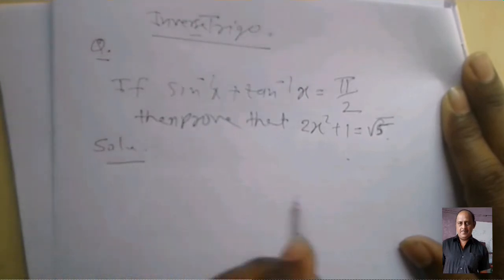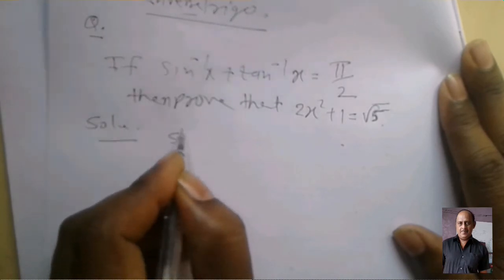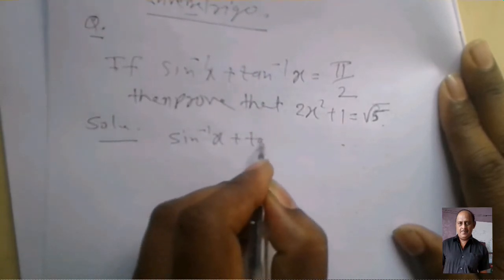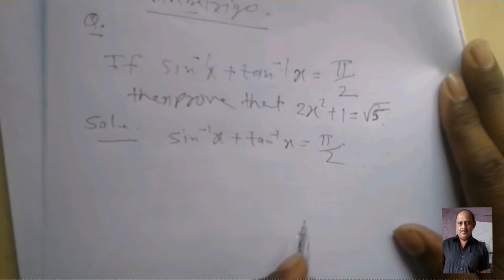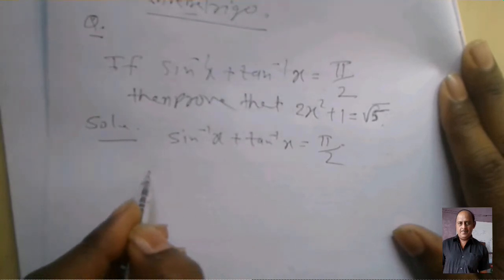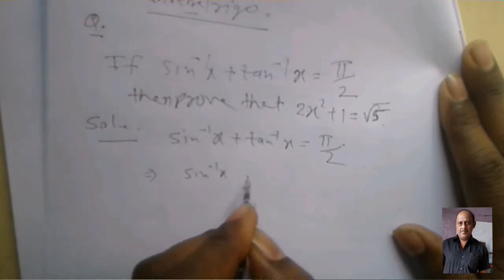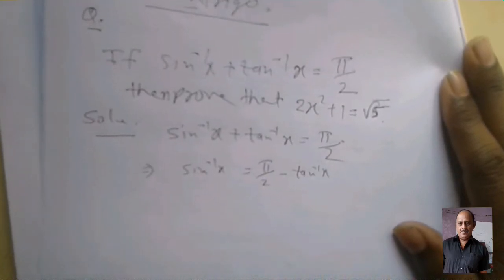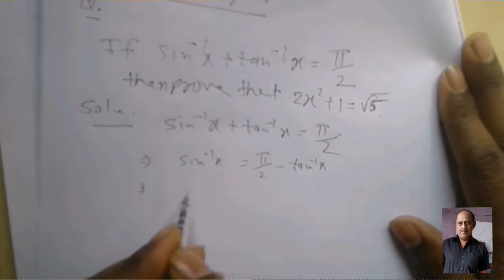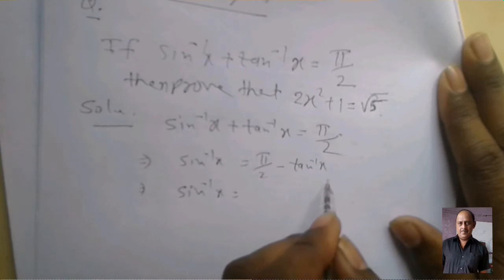Solution here. Question is given sin inverse x plus tan inverse x equal π/2, and sin inverse x equal π/2 minus tan inverse x.